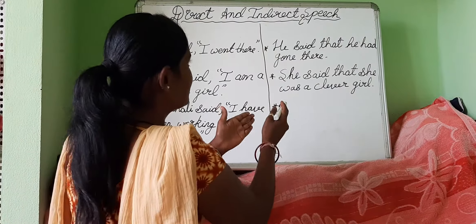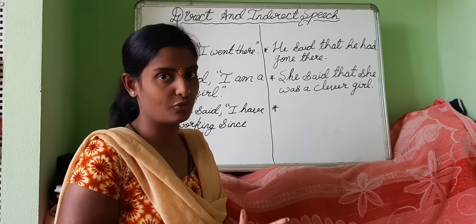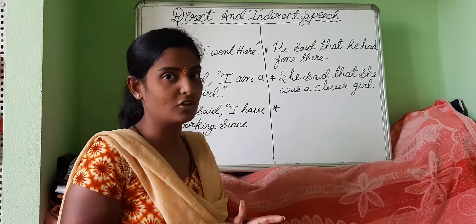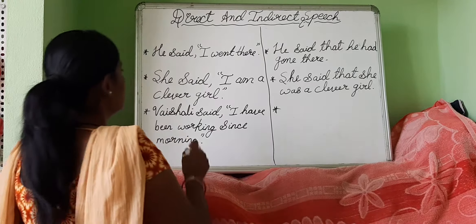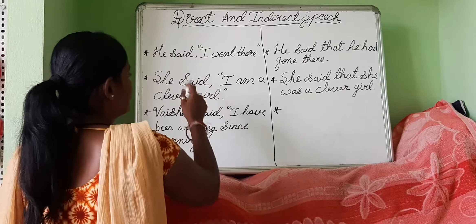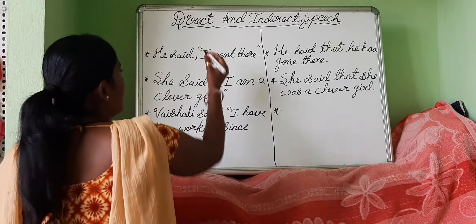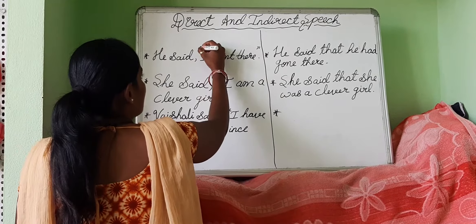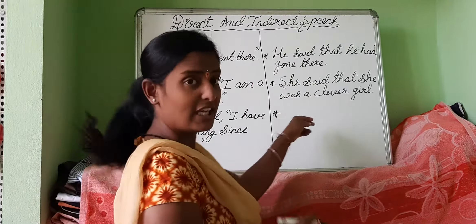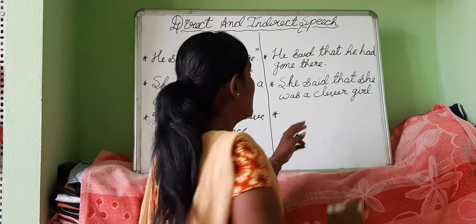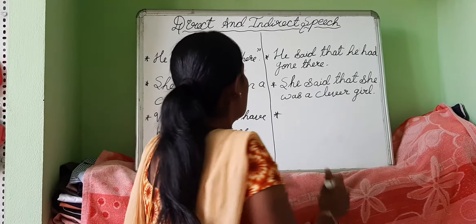Direct and indirect speech have three different types of rules and regulations and we have to follow them. The first rule is, in direct speech, the main sentence has been written in the inverted commas. But in the indirect speech, they do not have any type of inverted commas.